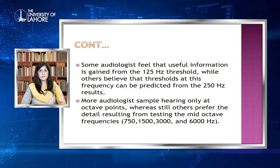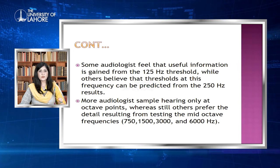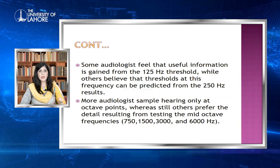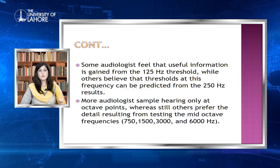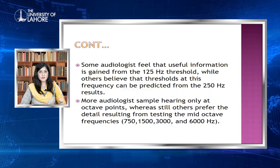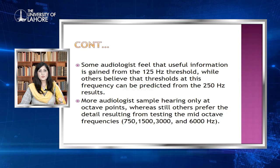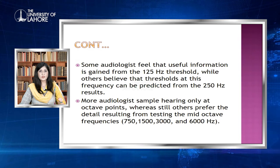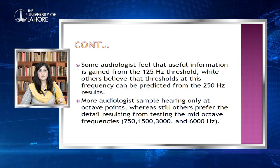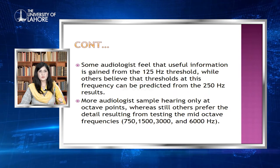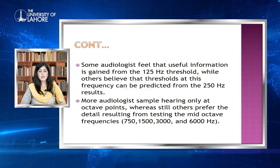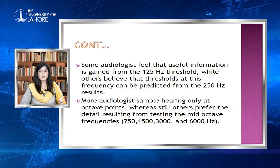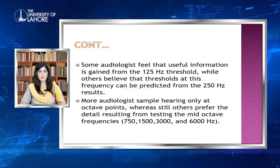Some audiologists feel useful information is gained from measuring the 125 Hz frequency threshold, while others believe it can be predicted from 250 Hz. Most of the time we start from 250 Hz and do not measure 125 Hz. More audiologists sample hearing only at octave points such as 1000, 2000, and 4000 Hz, whereas others prefer the detail from testing mid-octave frequencies like 750, 1500, 3000, and 6000 Hz.